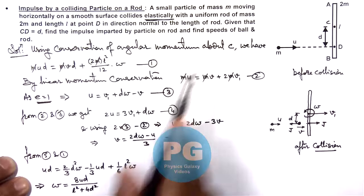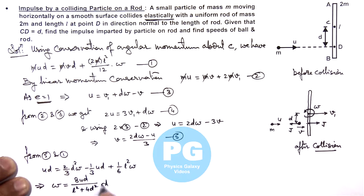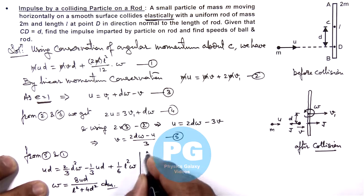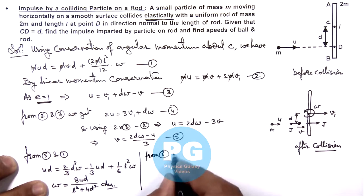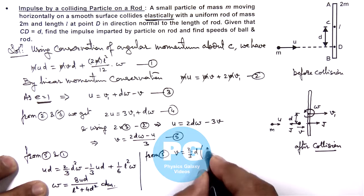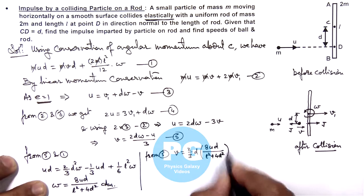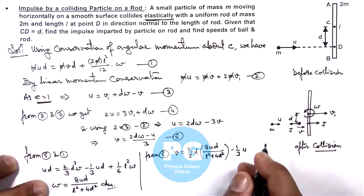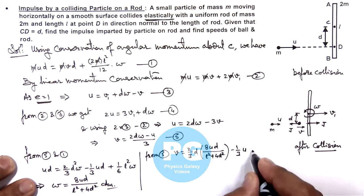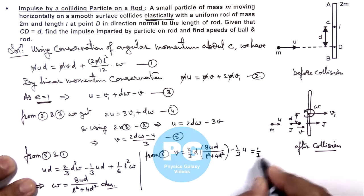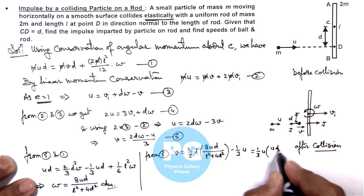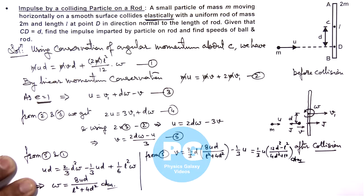The angular speed of the rod, ω = 8ud/(l² + 4d²), is one answer. Substituting this value of omega into equation 5, we get the final speed of the ball: v = (1/3)·u·(12d² − l²)/(4d² + l²).